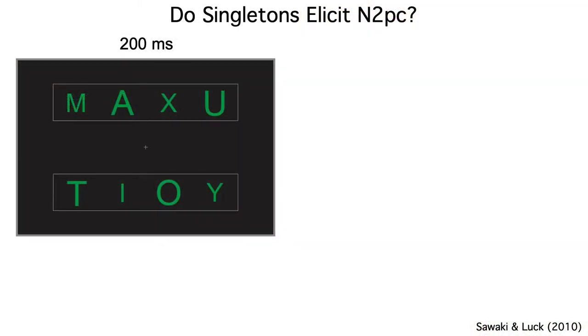So Risa designed the experiment shown here. Subjects viewed a sequence of displays, each of which was presented for only 200 milliseconds. At the beginning of each block of 56 trials, they were told that a particular letter of a particular size would be the target for that block. For example, they might be told that they should look for a large A.